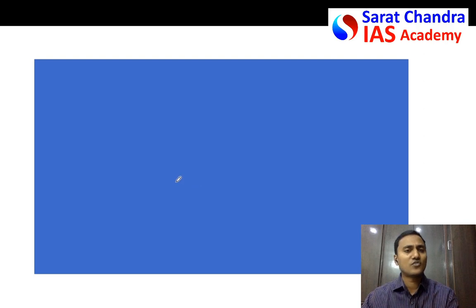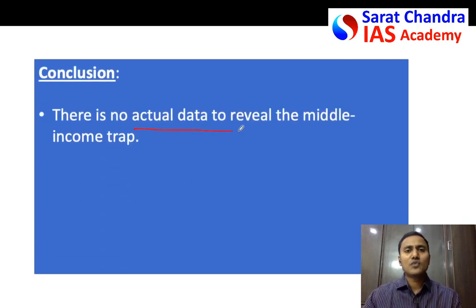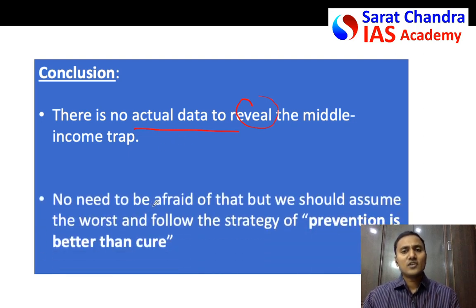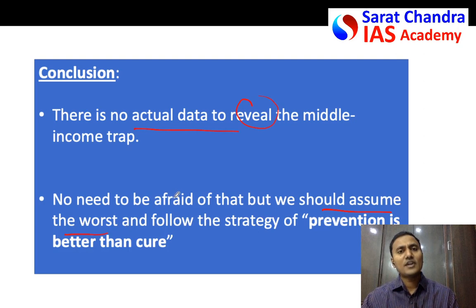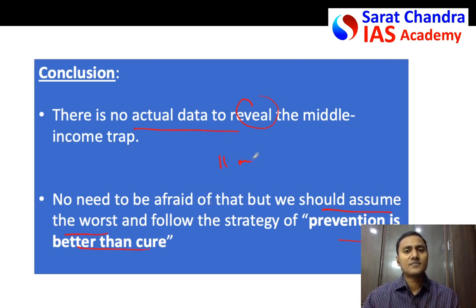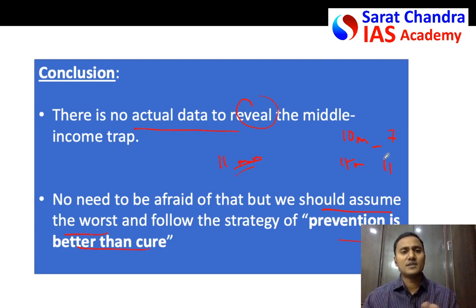Finally, conclude with three or four lines. For example, you can say that there is no actual data to prove that the middle income trap is coming for India — there is just a chance. Also mention that it is better to assume the worst — assume middle income trap may happen and try to prevent it from now. Use an optimistic quote or statement like 'prevention is better than cure.' This answer should be written in about 11 minutes — for 15-mark questions, around 11 minutes; for 10-mark questions, around 7 minutes — to finish all 20 questions in three hours.